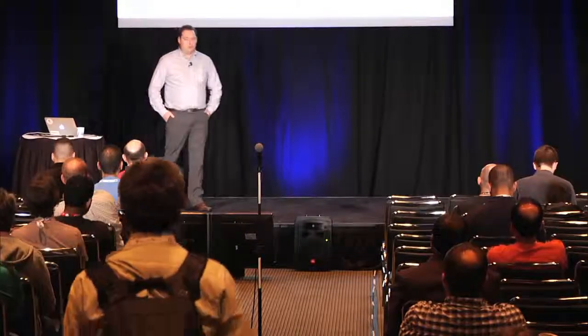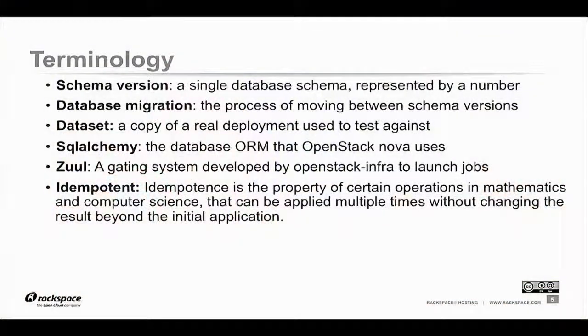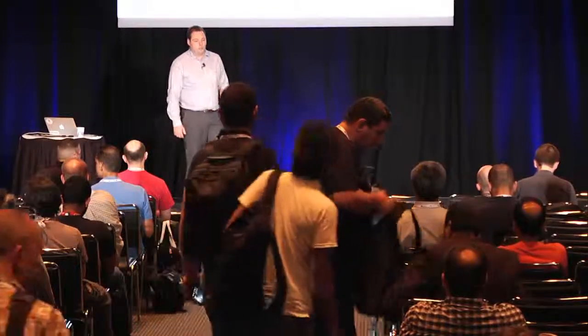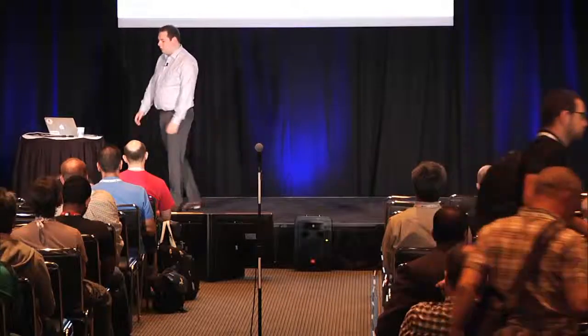We need to cover some basic terminology, make sure we're on the same page. Most of you probably know what this is, so I'll do it kind of quickly. A schema version is a number that we give to the database in a particular state. We do this to be able to determine how to upgrade people who have already deployed software to a newer version. So at schema version 200, you might have 10 tables, and then at 201, you might add a new table and have 11, or add a new column or drop a column. A database migration is the process of moving between these two versions — it's the migration that will add or remove that table for you.